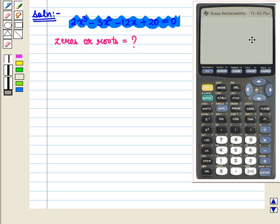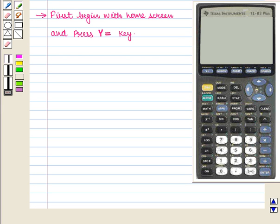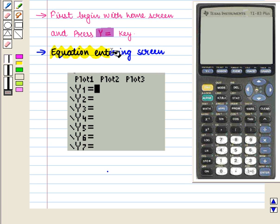This is the TI-83 Plus calculator and we will graph this equation on it. First we begin with the home screen and we press Y= key. This takes us to the equation entering screen where we will write our equation.